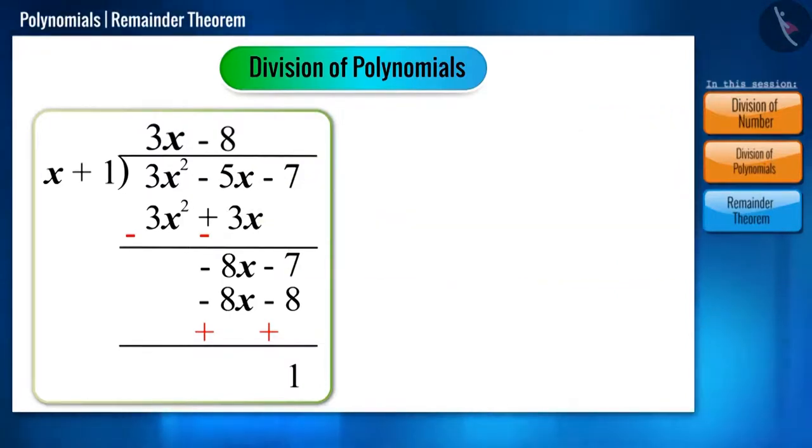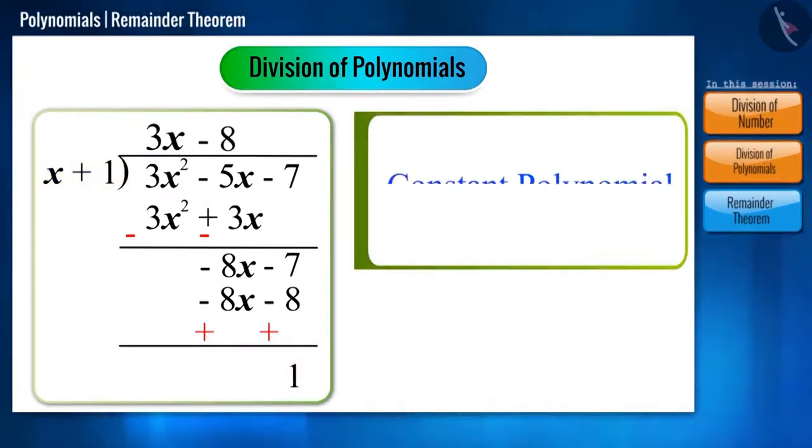Friends, the division process will not be complete till we get the power of the remainder 1 less than that of the divisor. This means if the divisor is the linear polynomial, then the remainder should be a constant polynomial or any number or 0.